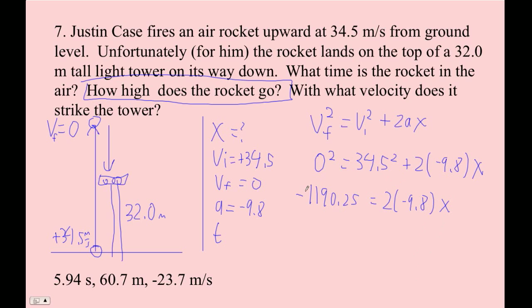So I squared this, put it over here, made it negative. Now I'll divide by 2, divide by negative 9.8. So divide it by 2, divide it by negative 9.8. And I get 60.727.